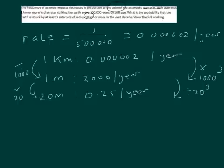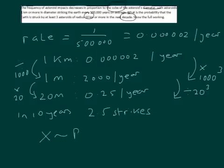But they're asking about the next decade, which is 10 years. So in 10 years, we'd expect 0.25 times 10, we'd expect 2.5 strikes. So the distribution is a Poisson distribution with parameter 2.5. And we want to find the probability that x is greater than or equal to 3.